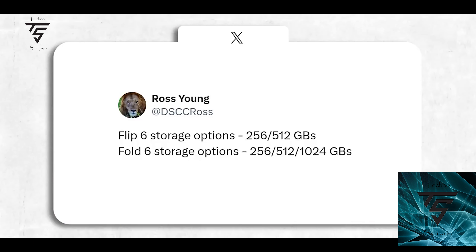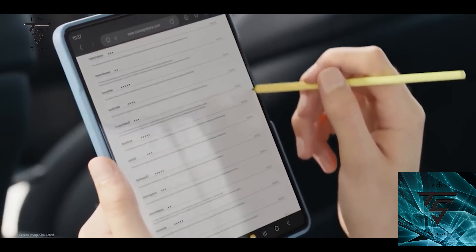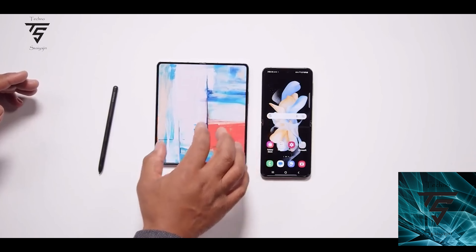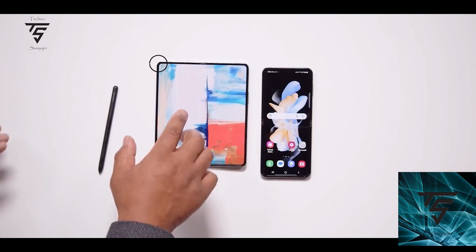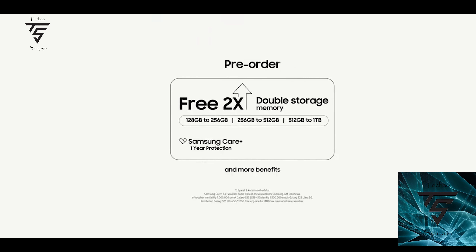Both the Z Flip 6 and Z Fold 6 will start at 256GB, so there will be no more 128GB variant option. The storage options are going up, and we also got leaks regarding the colors that the Z Fold 6 and Z Flip 6 will come in.